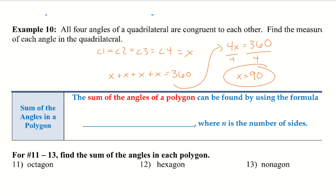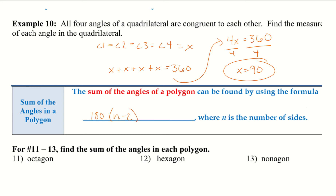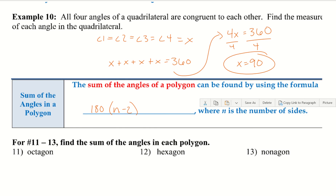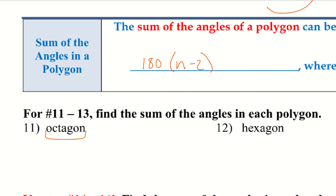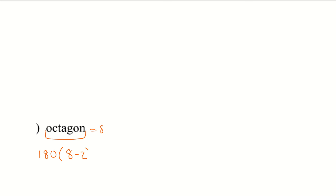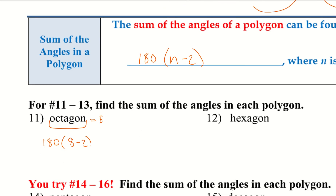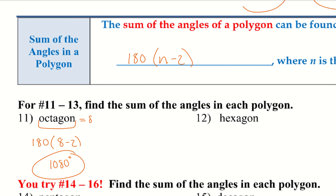The sum of the angles of a polygon can be found using the formula 180 times (n minus 2), where n is the number of sides. For example 11, an octagon has 8 sides: 180 times (8 minus 2) equals 180 times 6 equals 1080 degrees. For a hexagon with 6 sides: 180 times (6 minus 2) equals 180 times 4 equals 720 degrees.